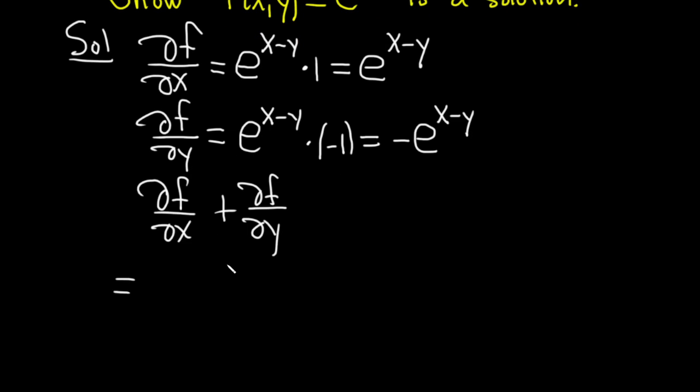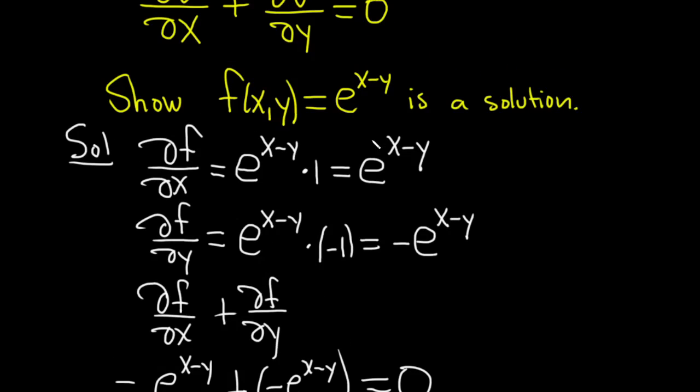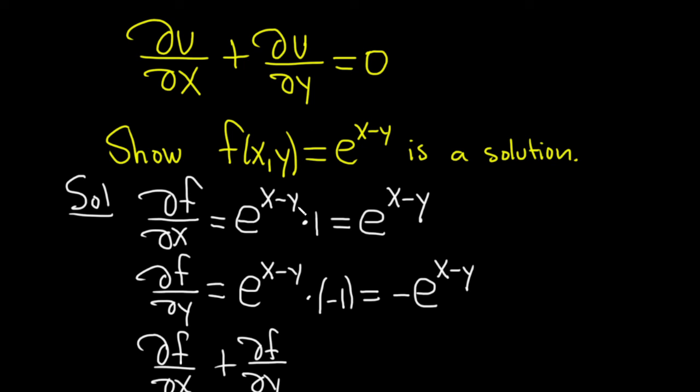And ∂f/∂x is simply e^(x-y) plus, and then ∂f/∂y we said was -e^(x-y). These are opposites and we're adding them, so we get zero. And that shows that this function is a solution to this partial differential equation.